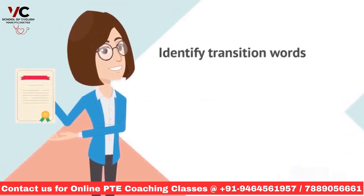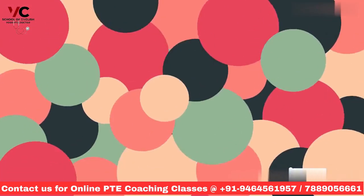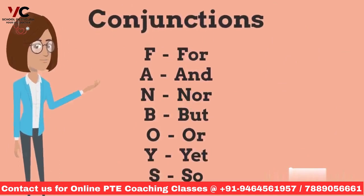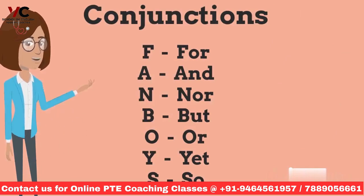Transitional words are like signs that help to shift from one idea to the next. There will be sentences having connectives like moreover, similarly, consequently, hence, otherwise, generally, therefore, besides, then, yet, because, and consequently. If any sentence starts with a conjunction like FANBOYS — for, and, nor, but, or, yet, so — that sentence is less likely to be the first sentence.